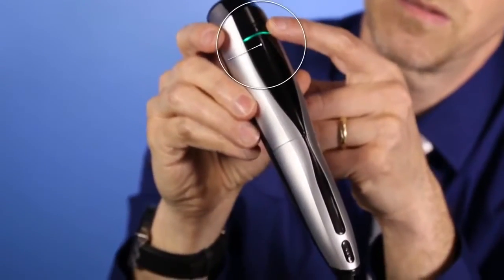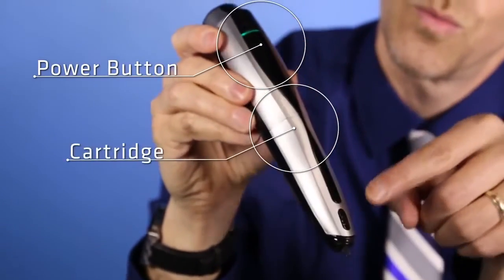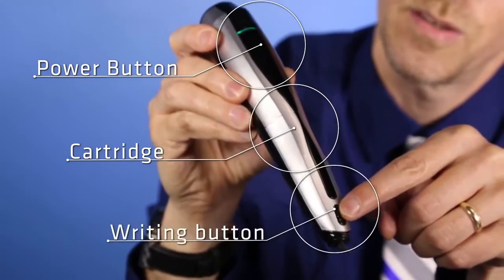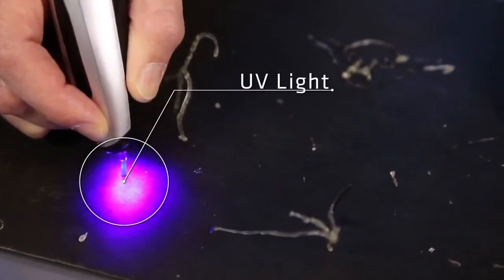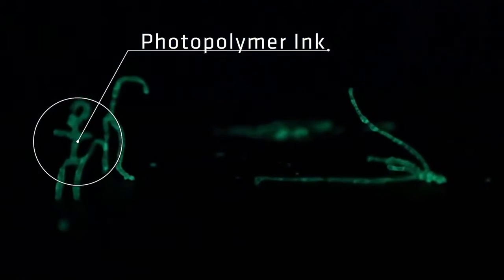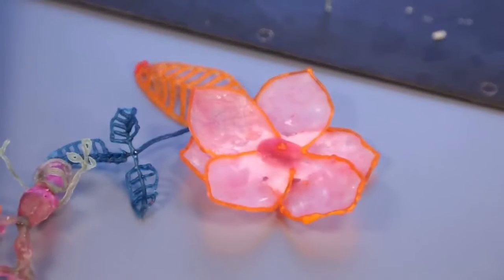It uses photopolymers and UV light to draw basically in space. One of the neat things about this is because they're using these polymers, and they've really invented this stuff, they can put other things inside the polymers. They can glow in the dark. They can be magnetized. They can have scent.